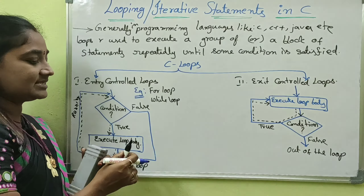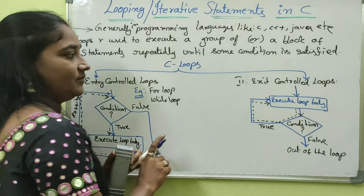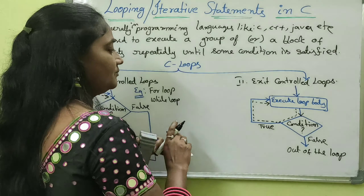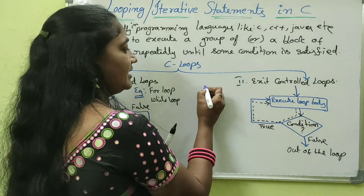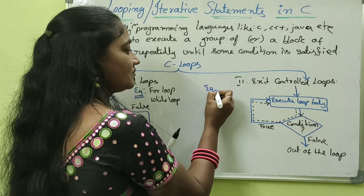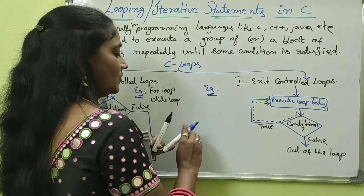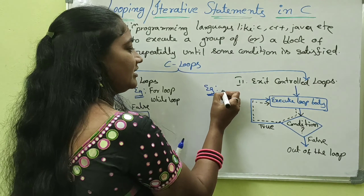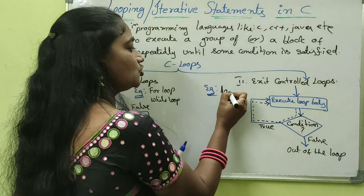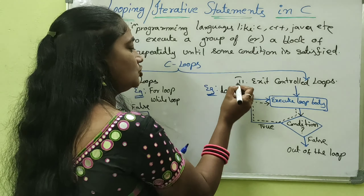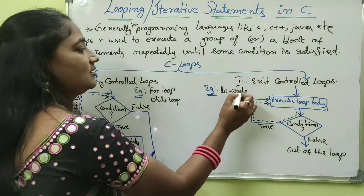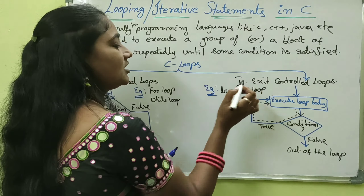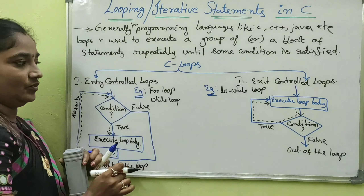An example of an exit controlled loop is the do-while loop. Do-while is an example of an exit controlled loop.